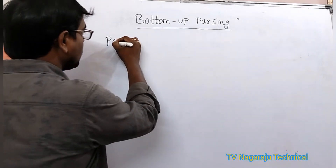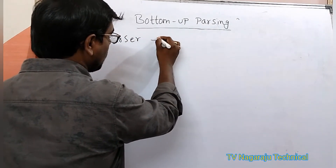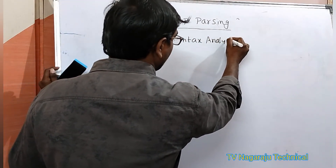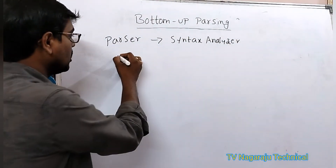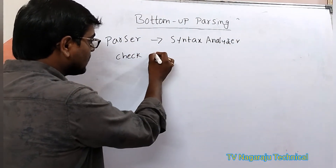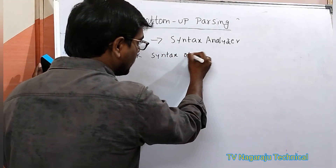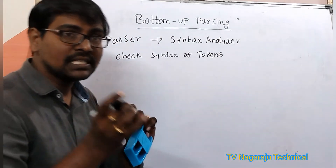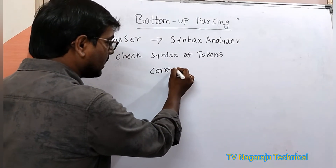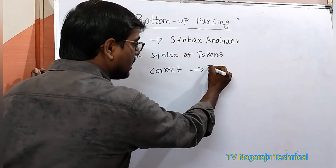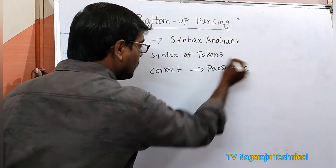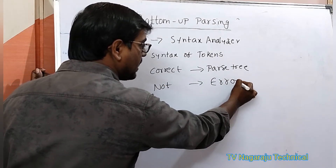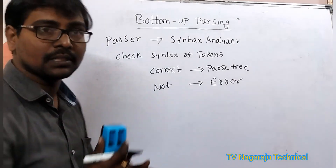What is a parser? A parser is also called a syntax analyzer. The main purpose is to check the syntax of tokens. If the syntax of the token is correct, it will generate the parse tree. If the syntax of the token is not correct, it will generate an error. This is the purpose of a parser.